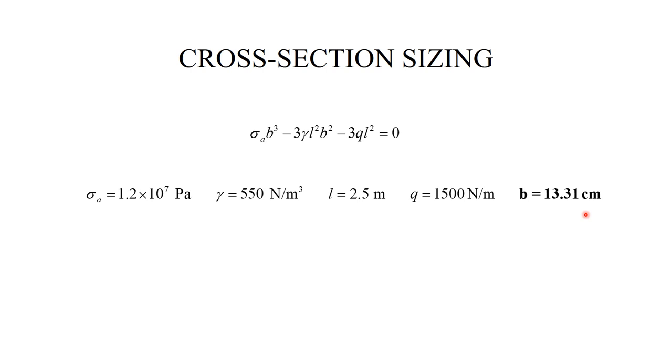I also observe that if gamma were equal to zero, so in other words, I neglect the weight of the beam, I have a much simpler equation. I simply take the cubic root of two terms, and I get the answer. And, I can compare the two cases. So, please observe the key difference is here, gamma is actual. Here, gamma is equal to zero, means it's neglected. And, if you look at the difference, this difference is tiny.